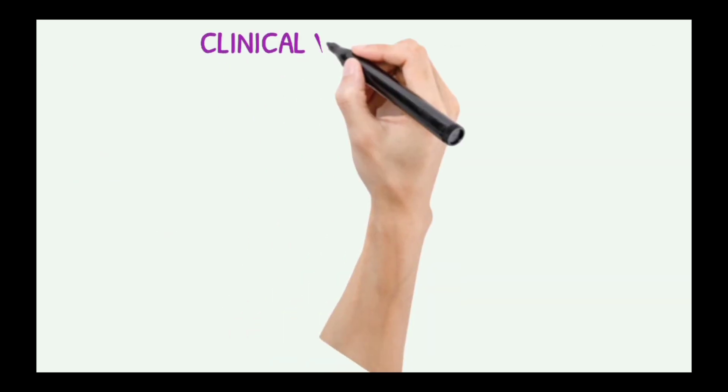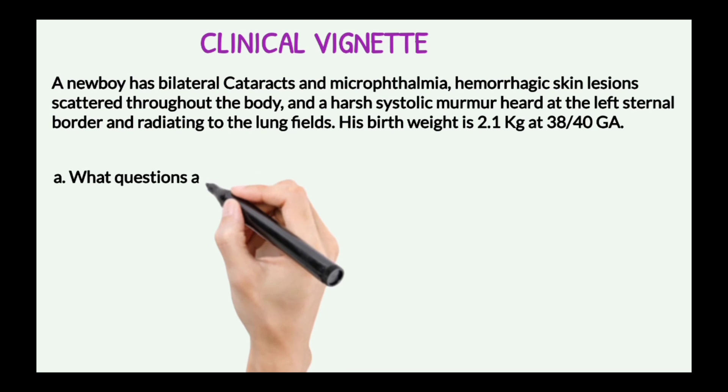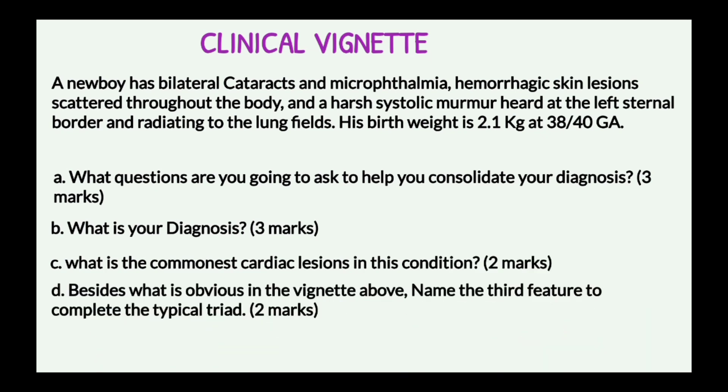Clinical scenario: A newborn has bilateral cataracts and microcephaly, hemorrhagic skin lesions scattered throughout the body, and a harsh systolic murmur heard at the left sternal border radiating to the lung fields. Birth weight is 2.1 kg at 38 weeks gestation. Questions: What questions will you ask to help consider your diagnosis? What is your diagnosis? What is the most common cardiac lesion in this condition? Name the third feature to complete the classic triad.